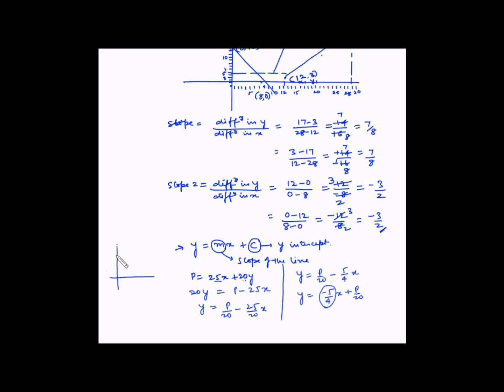Since the slope is a negative number, this line would slope downward from left to right on the x-y axis. The value 5/4 signifies that for every 4 units that x moves, the y-coordinate moves by 5 units — so if the horizontal step is 4, the vertical step is 5.